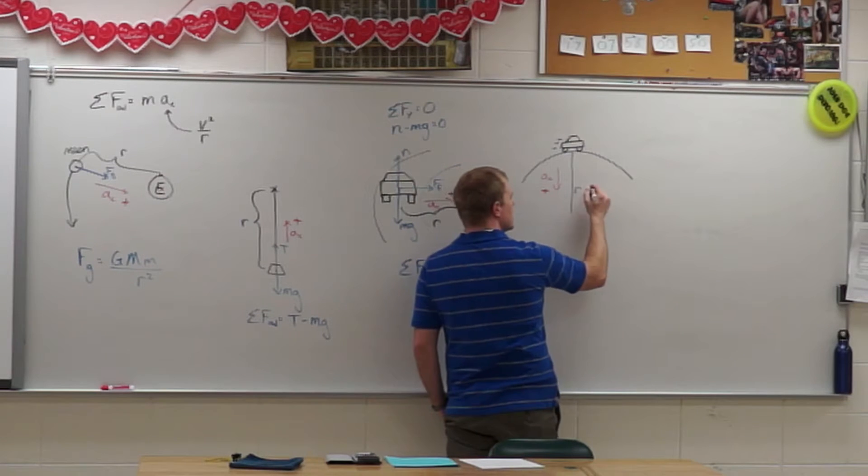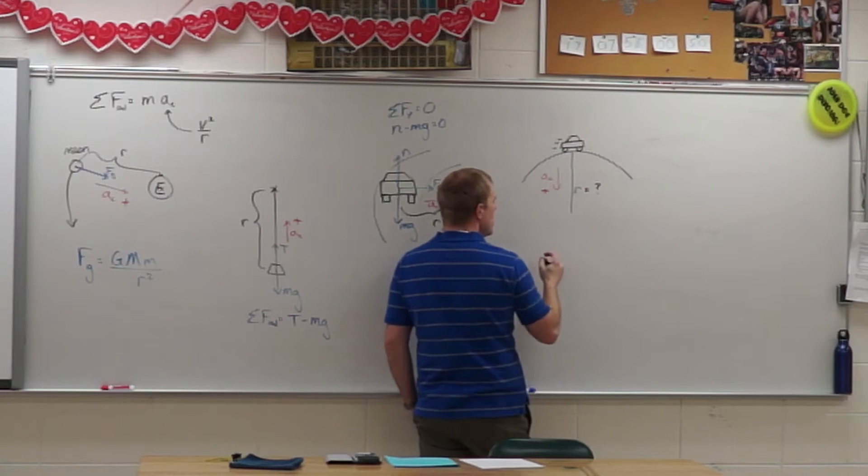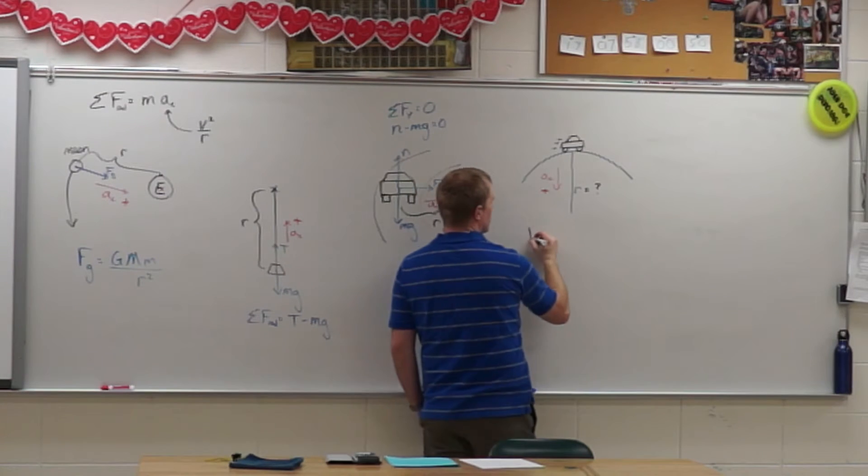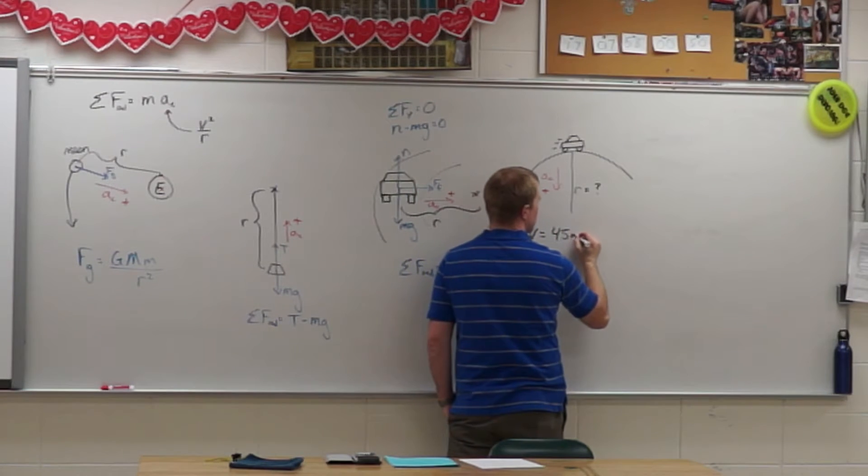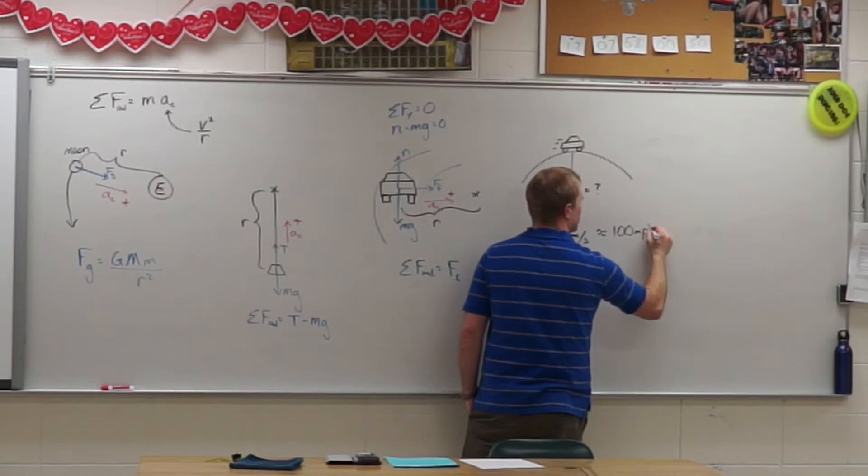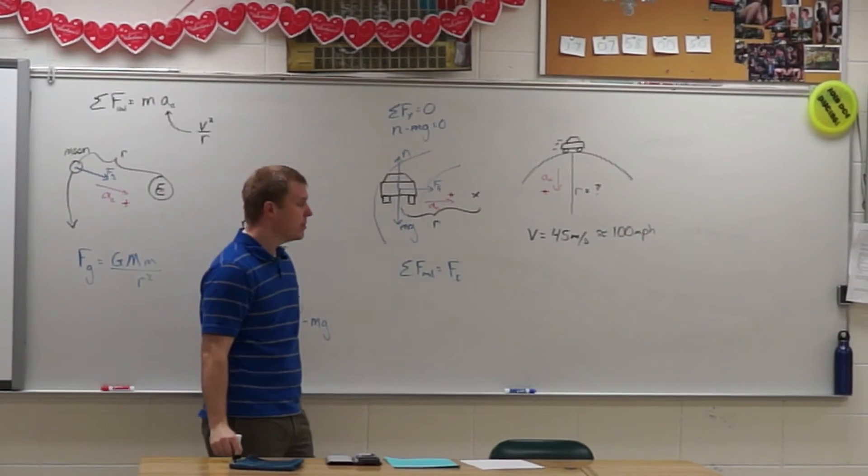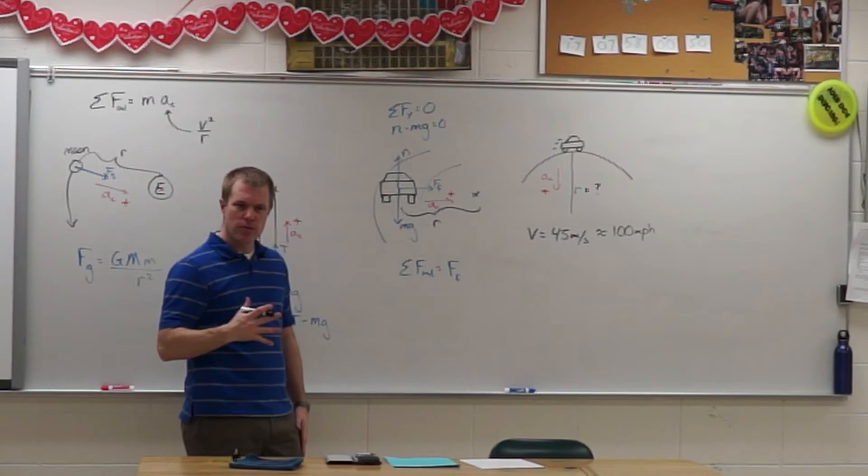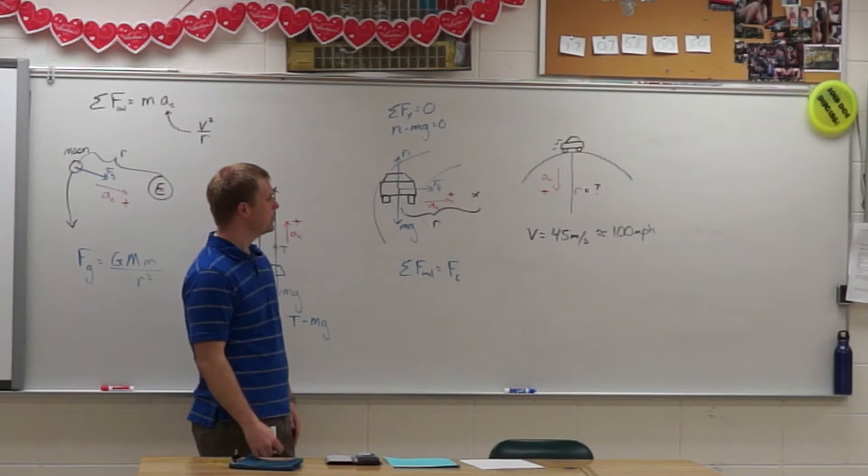So I want to know what is this radius of curvature needed so that the speed where they're just starting to lose contact with the road is about 45 meters per second, which is approximately a hundred miles an hour. So as long as they're going less than a hundred they'll stay on the road. They won't catch air.